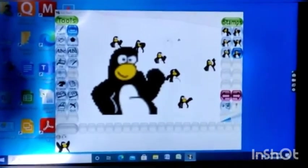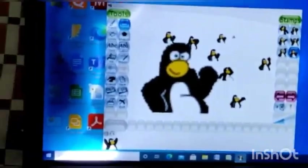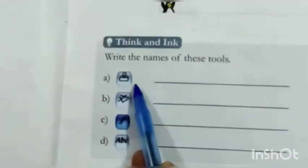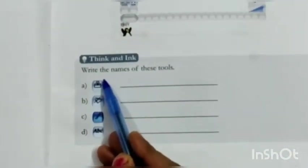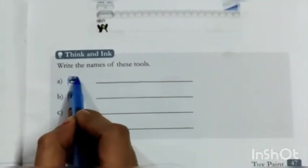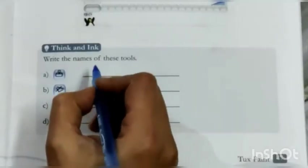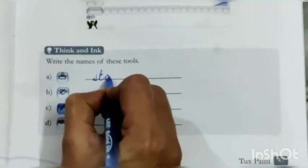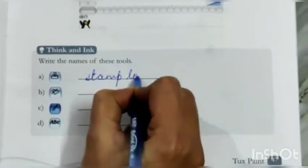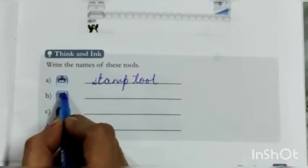So here is your question. In your book on page 47, we have to identify these tools and write their names. So what is it? It looks like a stamp. So this is stamp tool.